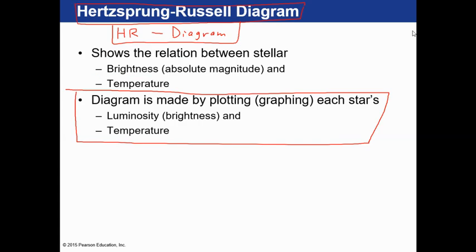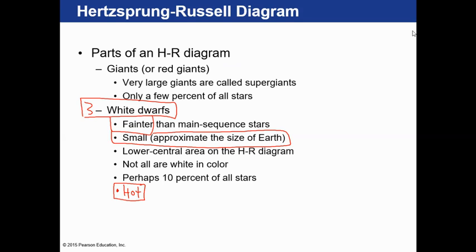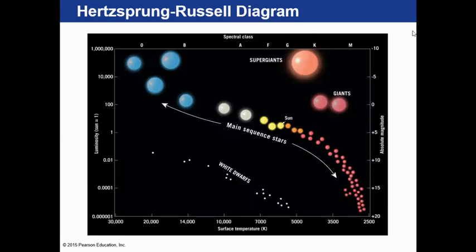Let's move on to the Hertzsprung-Russell, or HR diagram. Many decades ago, astronomers started graphing a star's brightness versus temperature. There are four different parts to it. Main sequence stars, where 90% of stars are located, including the sun. Giant stars—also called red giants—which are very bright and very large, but also very cool because they're reddish in color; red is the cool color in physics, and blue is the hot color. And white dwarfs, which are fainter and smaller—only about the size of Earth, even though they have as much mass as the sun, making them incredibly dense. Most stars fall along the main sequence, but when stars begin to die, they expand, becoming brighter and cooler, which is why they show up toward the top and left of the chart.